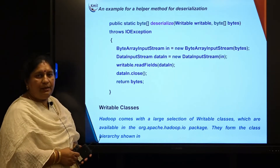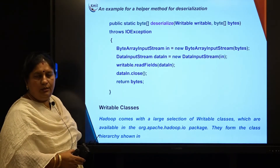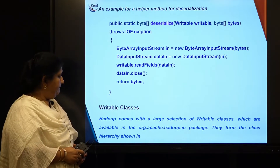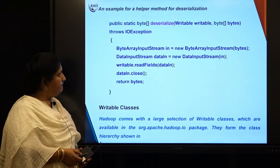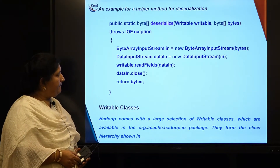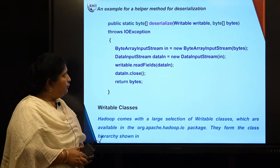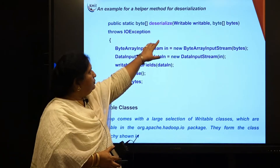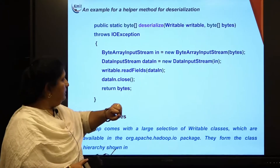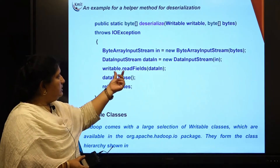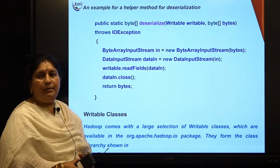Similarly, the helper method for deserialization takes a writable object and a byte stream as parameters. Once the byte stream is taken, it breaks it into individual fields of the object, which are maintained in the byte array.